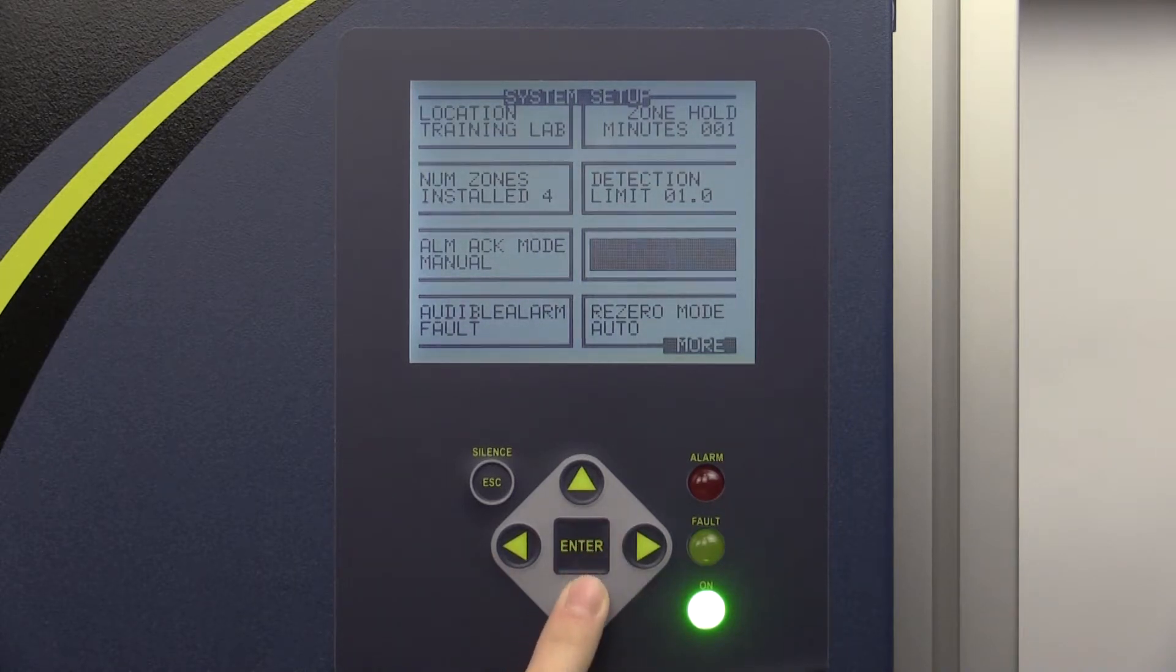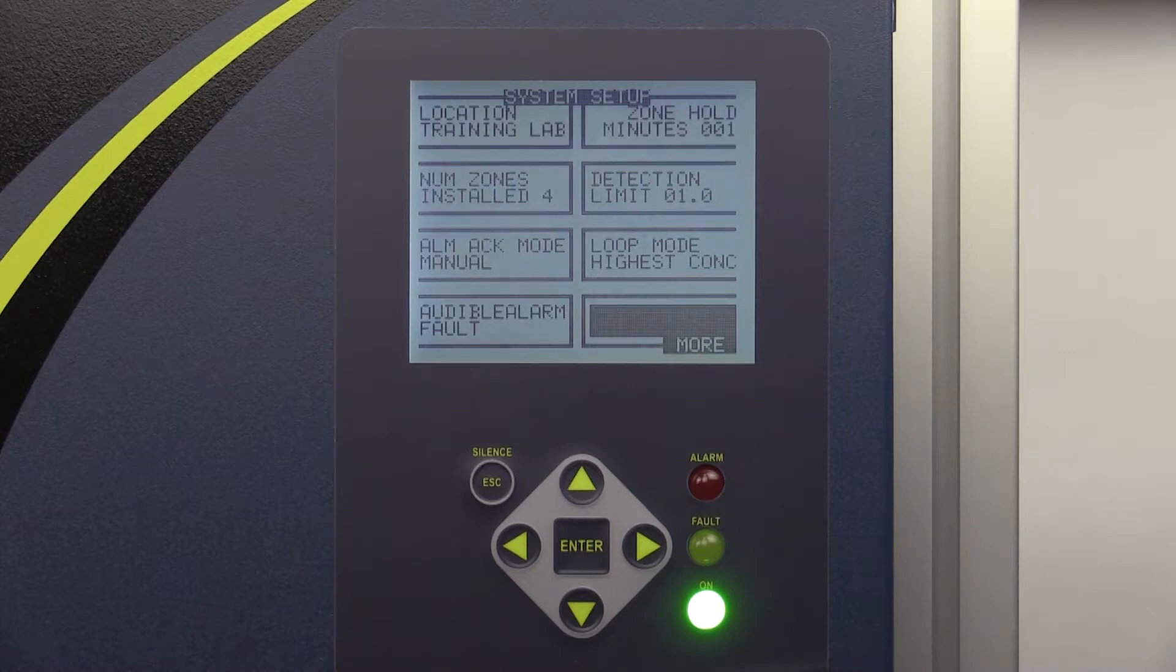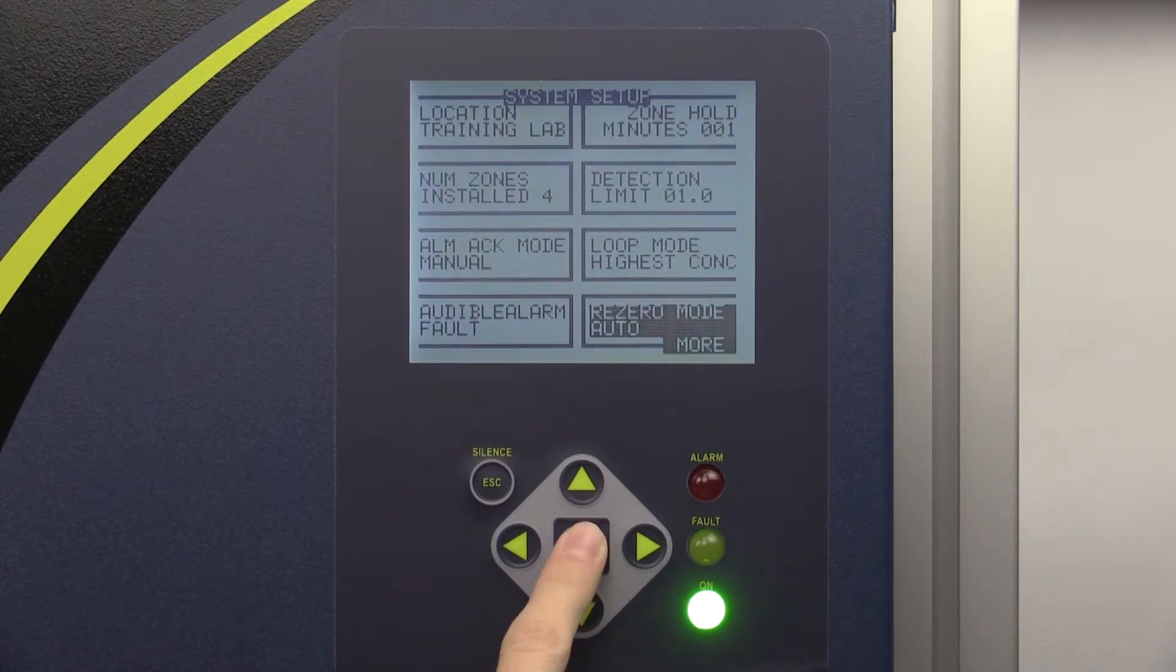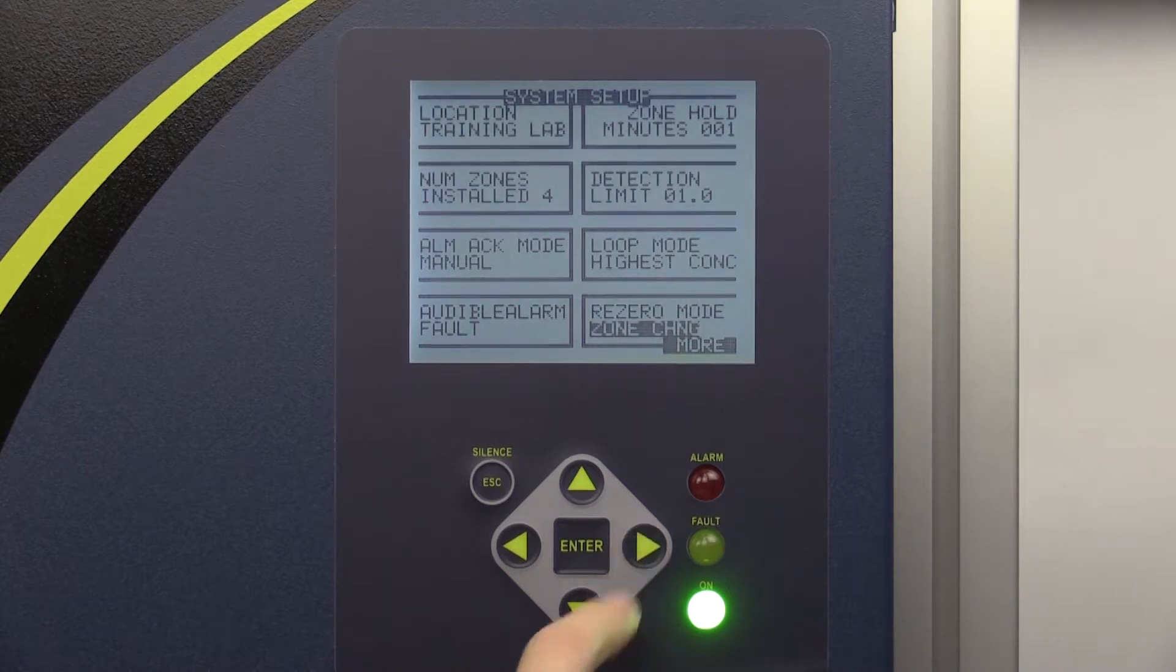The ReZero mode tab allows you to set the frequency at which the device recalibrates the optical sensor. The Auto option will recalibrate the sensor every 10 minutes. The Zone Change option will recalibrate the sensor at every zone change. The Zone Change option is the most accurate setting, but it increases the time interval between measurement cycles.